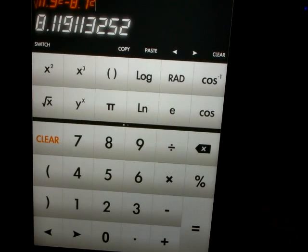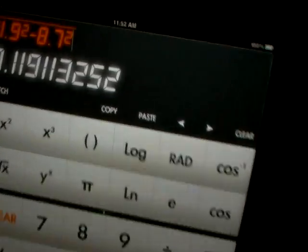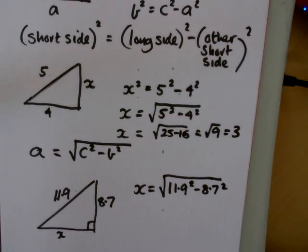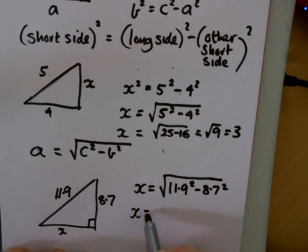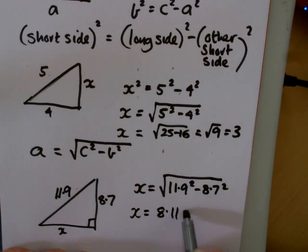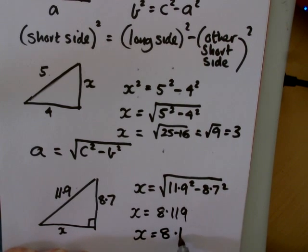to 8.119, 8.119. So I'll write that down, so x equals 8.119, probably want it rounded to one decimal place, x equals 8.1.